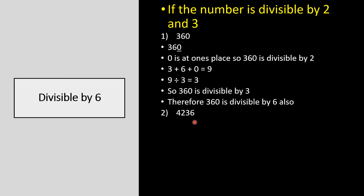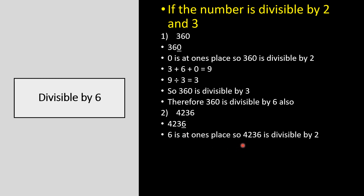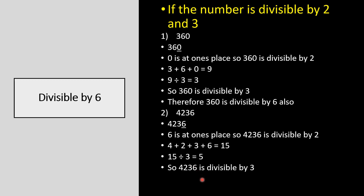Let us take one more example: 4236. First check for 2 — 6 is at the ones place, so 4236 is divisible by 2. Now check for 3 — 4 + 2 + 3 + 6 = 15, and 15 divided by 3 equals 5, so 4236 is divisible by 3. Because it is divisible by both 2 and 3, 4236 is divisible by 6 also.